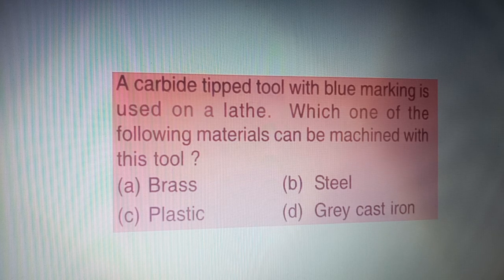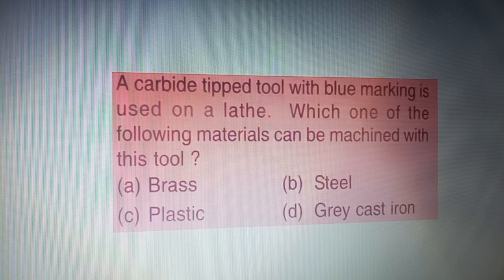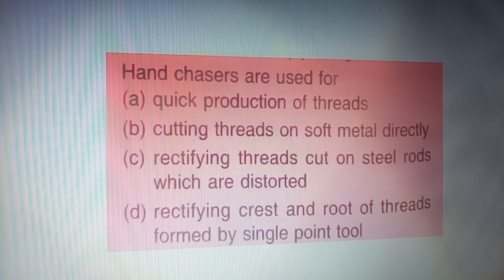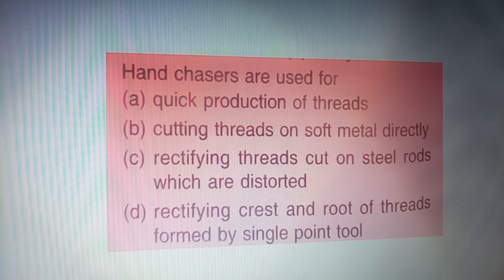Next question: a carbide tip tool with blue marking is used on a lathe. Which one of the following materials can be machined with this tool — four options are given on your screen. The correct answer is option B — steel.